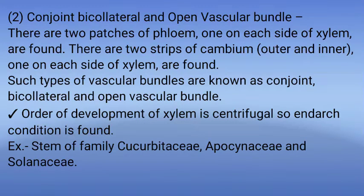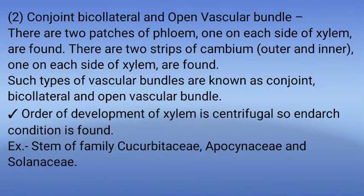The second type: Conjoint Bicollateral and Open Vascular Bundle. In this, there are two patches of phloem and one patch of xylem. There are two strips of cambium, outer and inner, one on each side of xylem. Such types of vascular bundles are known as Conjoint Bicollateral and Open Vascular Bundles. Order of development of xylem is centrifugal, so the endarch condition is found. Example: Cucurbitaceae, Apocynaceae, and Solanaceae families. Let's see the diagrammatic representation of Conjoint Bicollateral and Open Vascular Bundle.